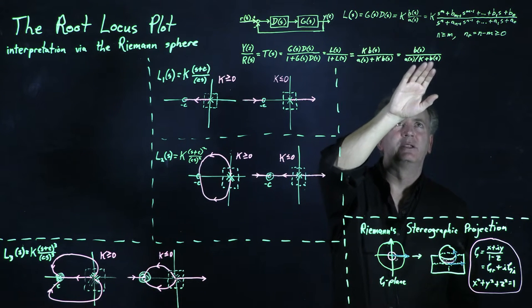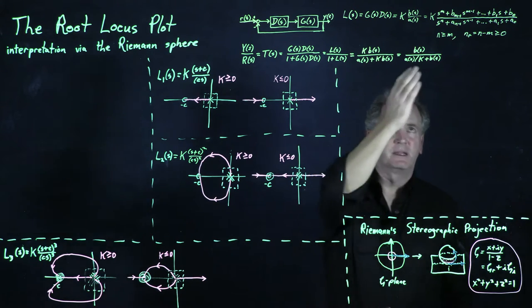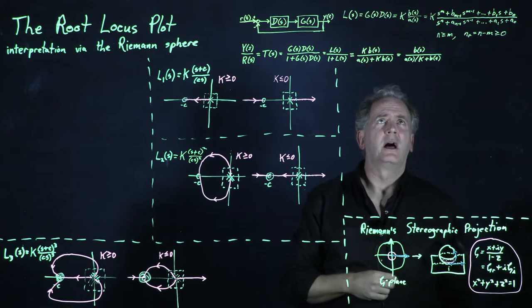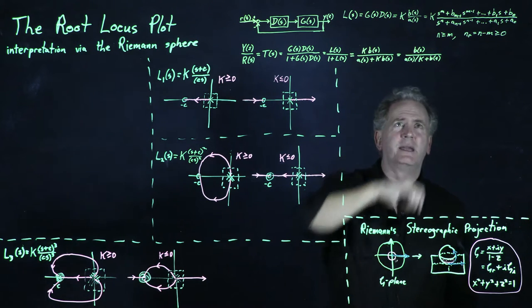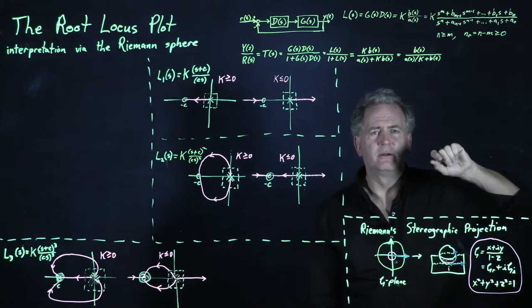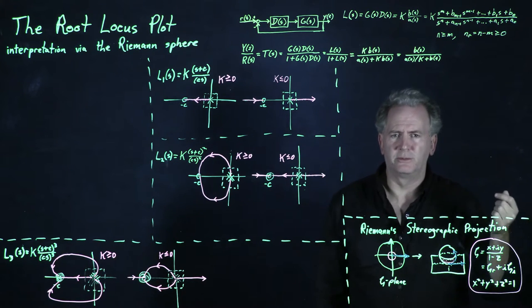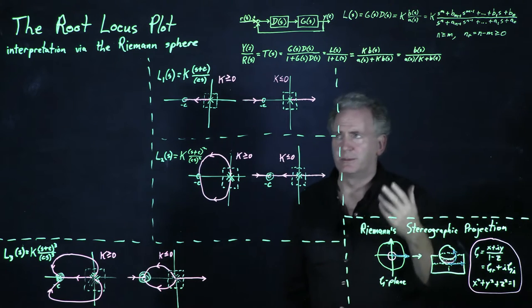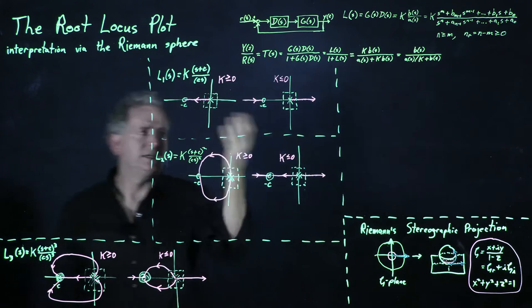And so the values of S that make the denominator go to zero in this case are the values of S that make B of S go to zero. So we expect the closed loop poles to move from the open loop poles to the open loop zeros as K goes from small to large. And so that's indeed what we saw.